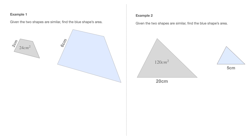In this video on similar shapes and similarity, we're going to learn about areas of similar shapes. More specifically, given two similar shapes, we're going to learn how to calculate the area of one shape using the area of the other. In the first example, the shape with the unknown area is an enlargement of its similar shape, and in the second example, the shape with an unknown area is a reduction of its similar shape. There's a bit of a catch when it comes to reductions, so do make sure to watch both examples. Let's get started.